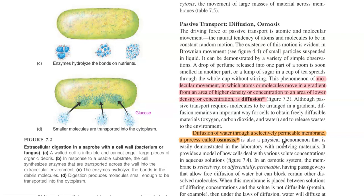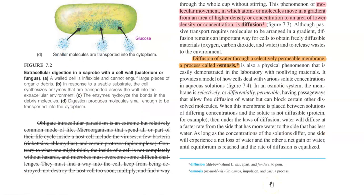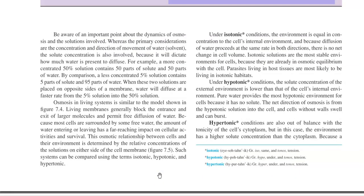A form of diffusion is osmosis — water moving through a selectively permeable membrane is referred to as osmosis. In an osmotic system, the membrane is selectively or differentially permeable, which allows the free diffusion of water. However, it blocks certain other dissolved molecules from moving in or out. Living membranes generally block the entrance and exit of large molecules and permit free diffusion of water alone.